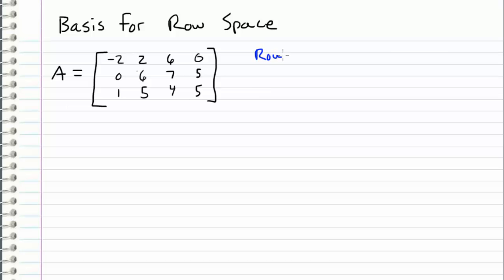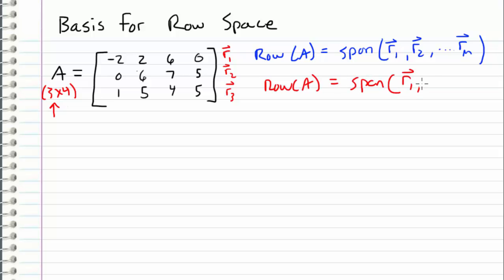In the previous video I defined the row space of a matrix as the span of the vectors that create the rows. So for a matrix with m rows, the row space of A would be the span of all the rows from 1 to m. In this particular example, we have a 3 by 4 matrix, so the number of rows is 3. We can call this R1, this is R2, and this is R3. So the row space in this example is just the span of R1, R2, and R3.